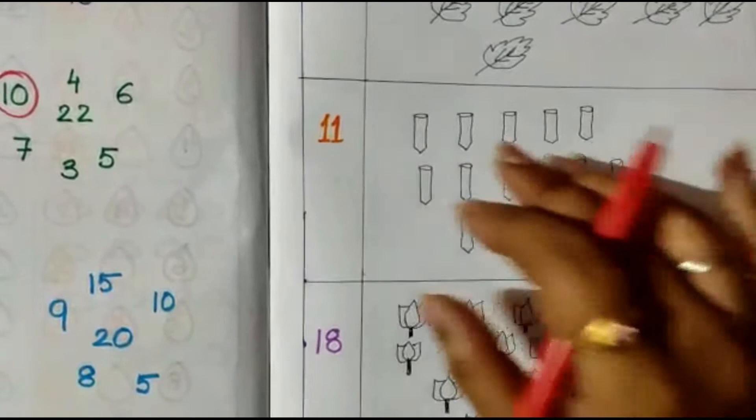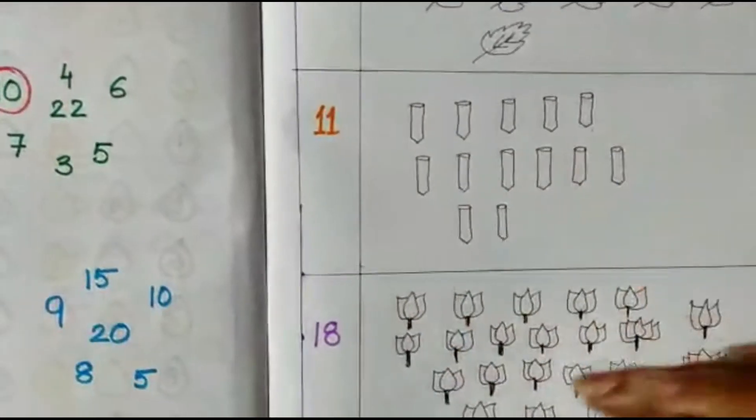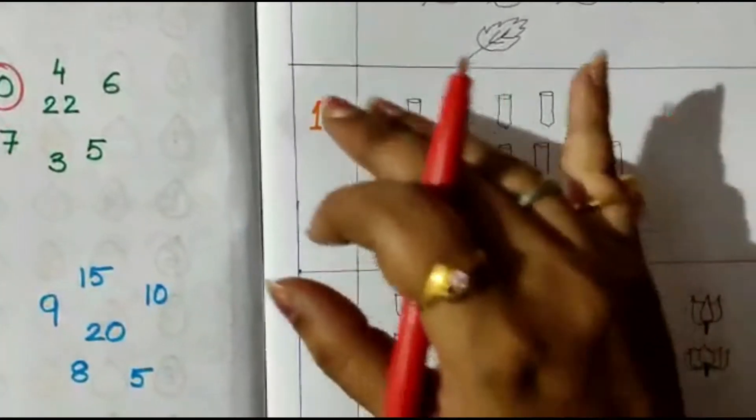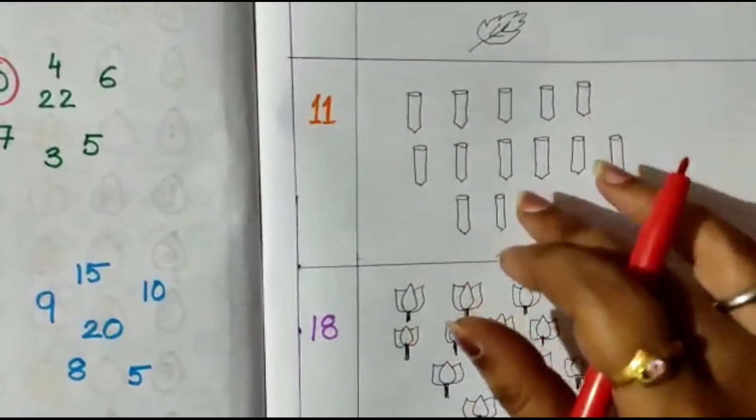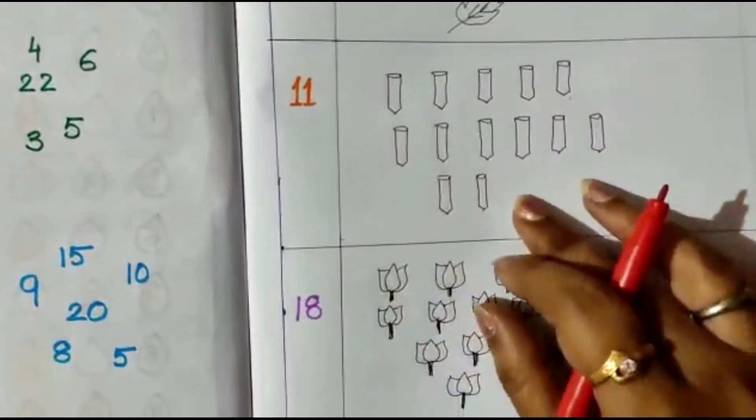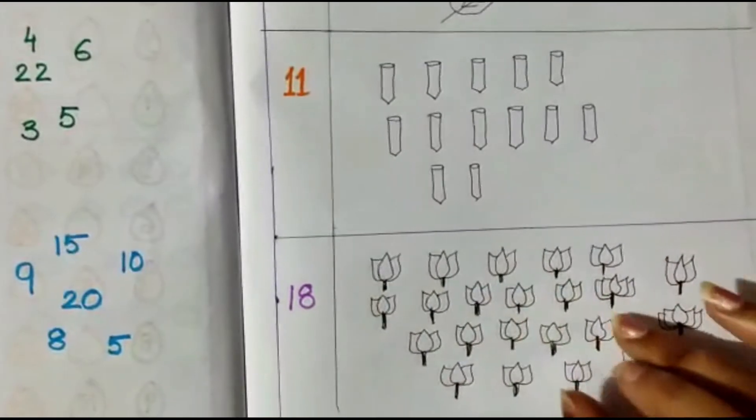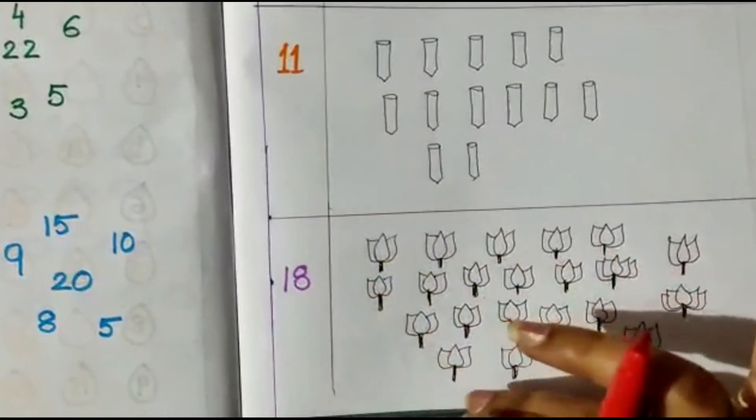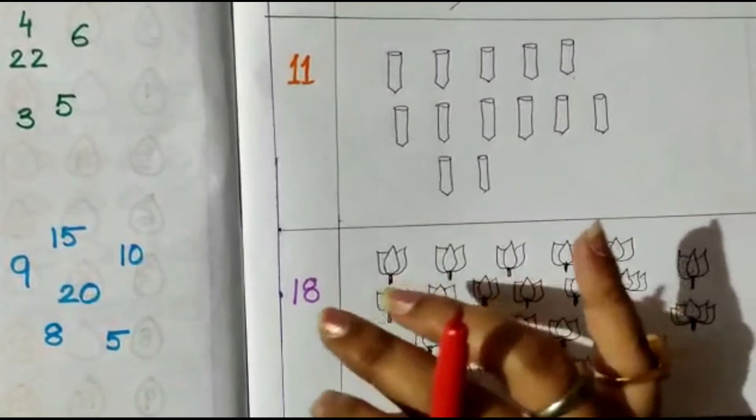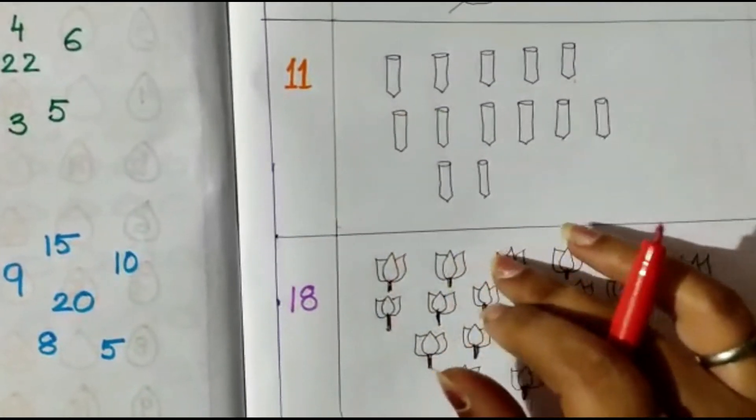Here we have 11 pencils, count and color 11. Here we have lotus flowers, 18 of them. We count 18 flowers and color them.